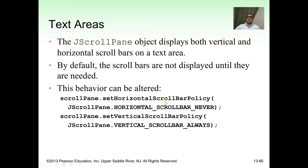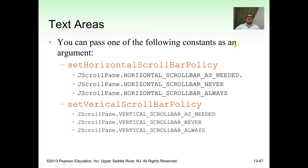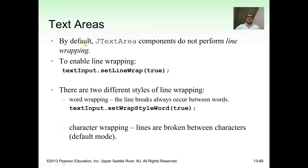You can pass constants like VERTICAL_SCROLLBAR_ALWAYS or HORIZONTAL_SCROLLBAR_NEVER to control scroll bar visibility. By default, JTextArea does not perform line wrapping. To enable line wrapping, use the appropriate setLineWrap statement. There are two styles: word wrapping, where line breaks occur between words, and character wrapping, where lines break between characters — the default mode.